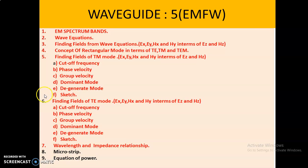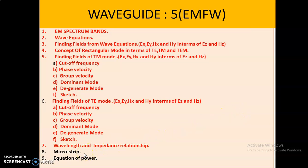Initially, we transmit our signal from transmitter to receiver through coaxial cable or through fiber optics. Our main goal here is to transmit our signal in the form of electric field and magnetic field from transmitter to receiver. Microstrip is another mode of transmission of electric and magnetic fields.